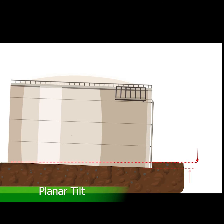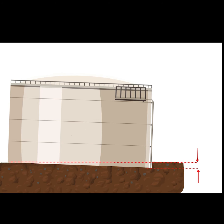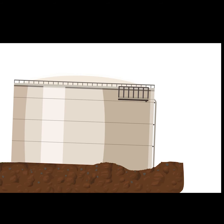Planar tilt. This type of settlement results in increased hoop stress in the tank shell and may cause binding of peripheral seals in a floating roof and inhibit roof travel.